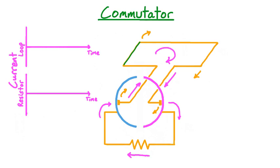Let's now see how the current in this setup changes with time. We've drawn two graphs: one shows the current in the loop with respect to time, and the second shows the current in the resistor with respect to time. At the instant of time currently pictured, the loop is horizontal and the green reference edge is towards the left, so the current has its maximum positive value. If the current in the loop has its maximum value, so does the current in the resistor, and we've chosen the direction of current from right to left through the resistor as the positive direction.